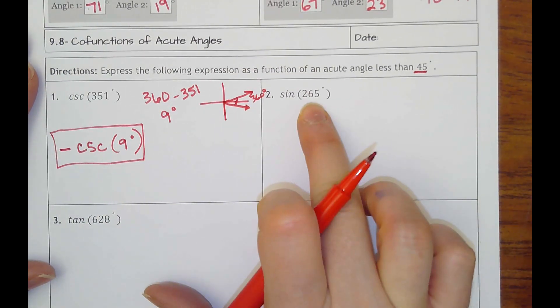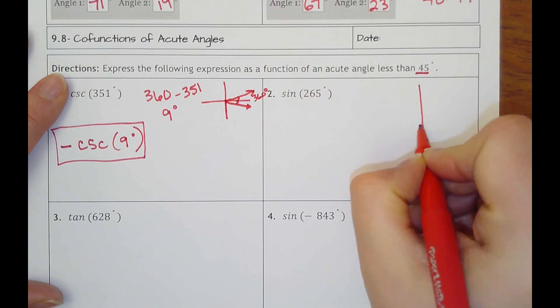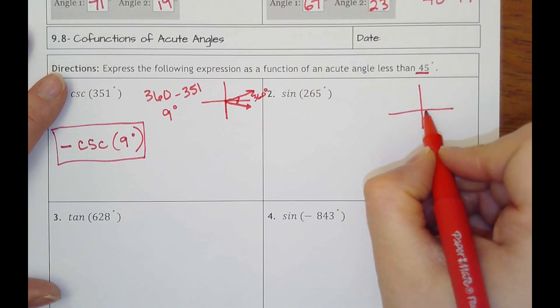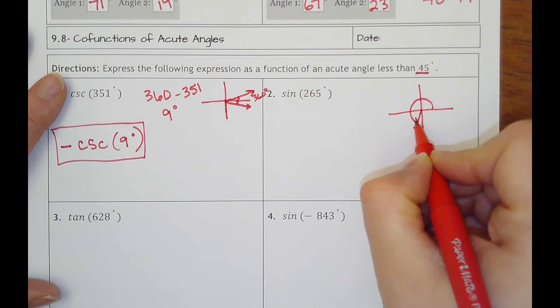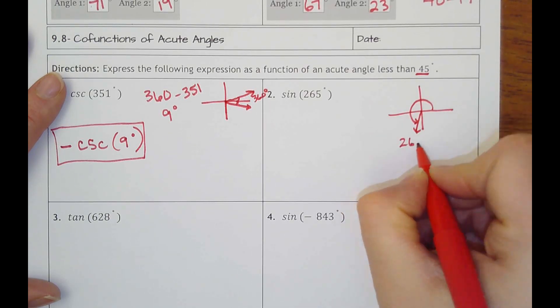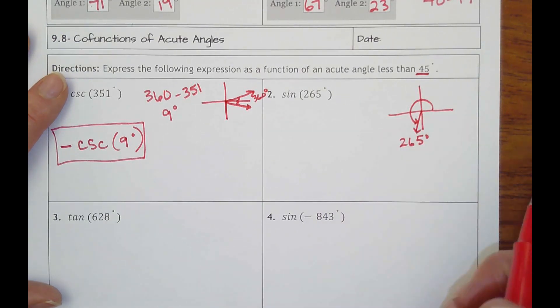All right, number 2. Our angle here is 265. Our goal is to get it to be less than 45. Think about where that falls. 265 would be not quite 270. So something like that. So I would first try to get the reference angle.